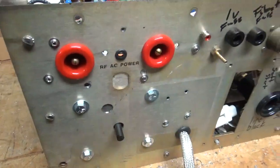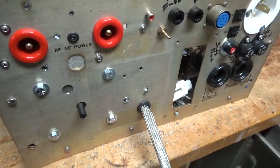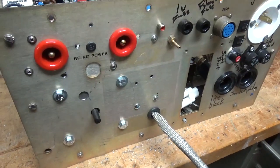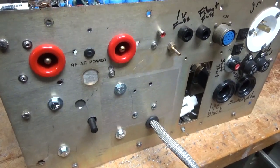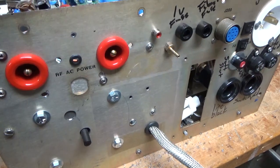So, this is the Variac to fine-tune the filament voltage. I've said before, plate supply is separate. Just the two transformers will be wired in parallel.